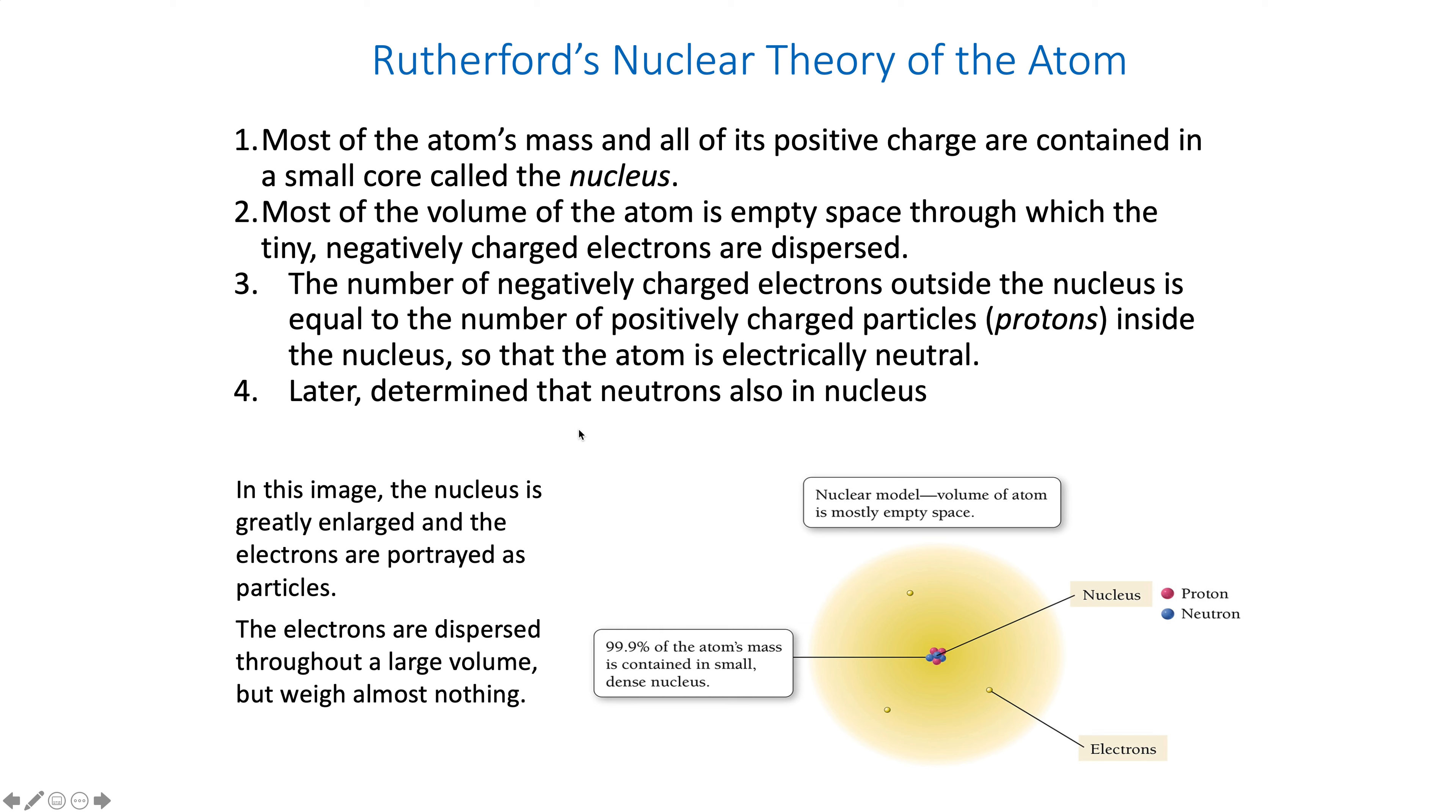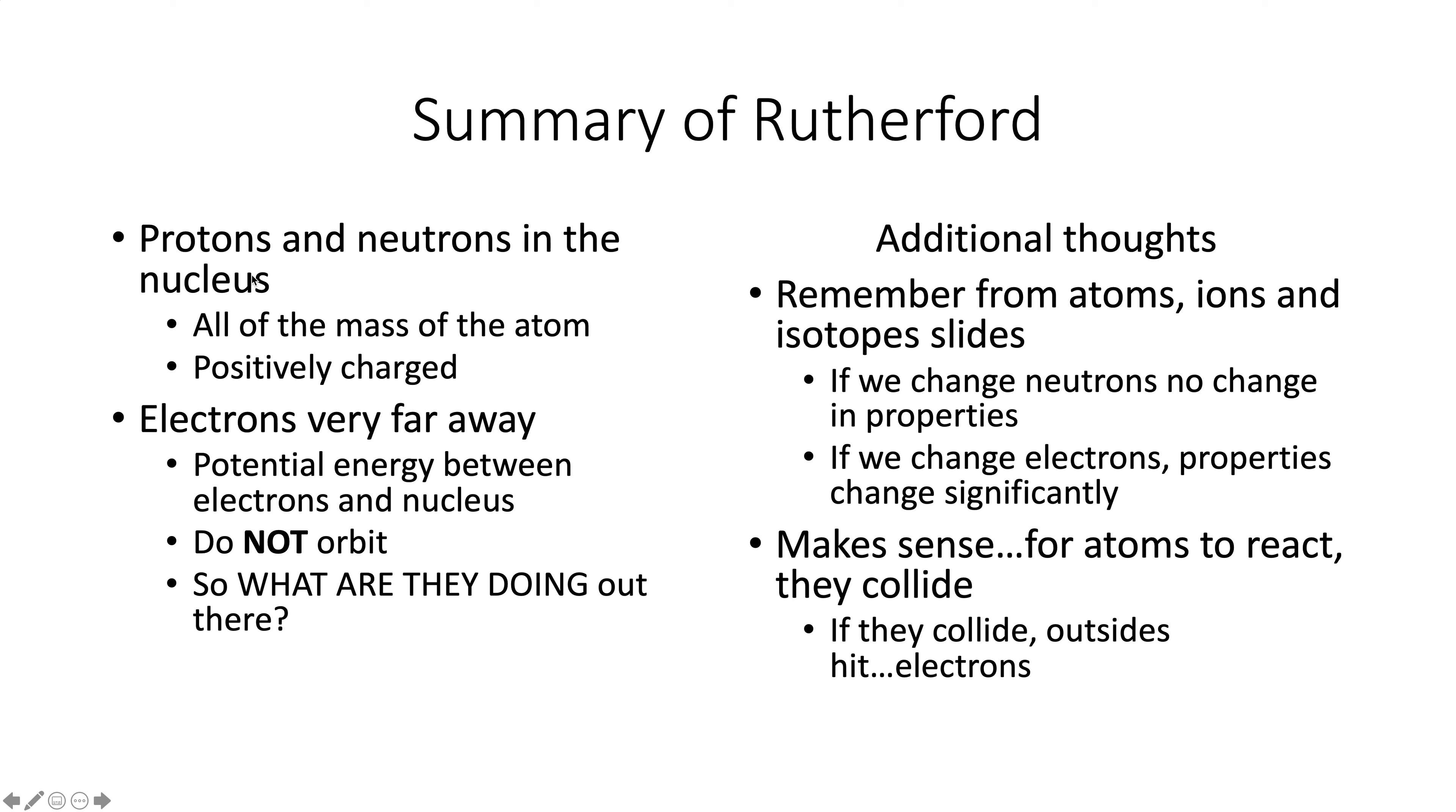So this is a summary of Rutherford. And then we'll stop this video and we'll start another video and just make sure. Yeah. All right? So this is Rutherford and this is correct. This is correct today. Protons and neutrons are in the nucleus. That means all the mass is in the nucleus and the nucleus is positively charged. Electrons are very far away. Realize that there's potential energy between the electrons and the nucleus, right? Because the electrons are negative and the nucleus is positive. So they must have enough energy to not crash in. They do not orbit. We'll talk about that later. So what are they doing up there? We'll get to that as well.